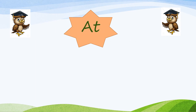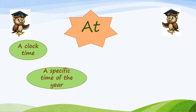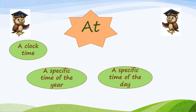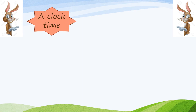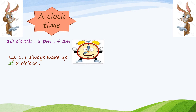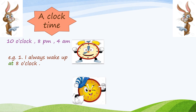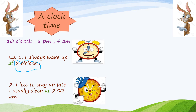Our third preposition is 'at.' When can we use 'at'? We can use it before a clock time, a specific time of the year, a specific time of the day, and places. So, if we have any clock time — such as 10 o'clock, 8 p.m., 4 a.m., 6 a.m. — we put 'at.' For example, I always wake up at 8 o'clock. Here we have 8 o'clock — it's a clock time, so I have to put 'at' before it. Second example: I usually sleep at 2 a.m. So 2 a.m. is my clock time, so we have to put 'at.'